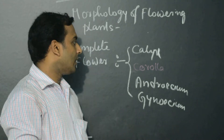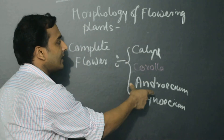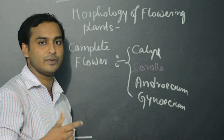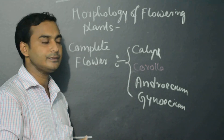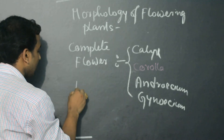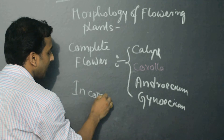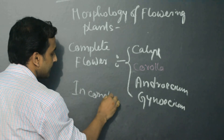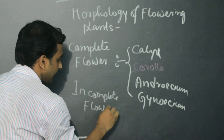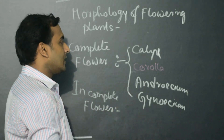When there is a lack of any part — like Calyx, Corolla, Androecium, or Gynoecium — it is called an incomplete flower. These are the differences between complete and incomplete flowers.